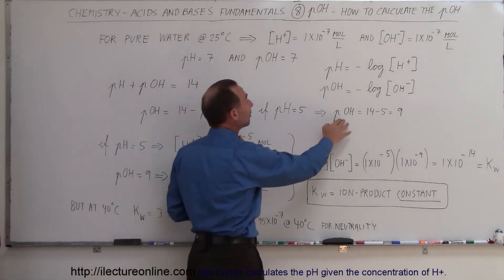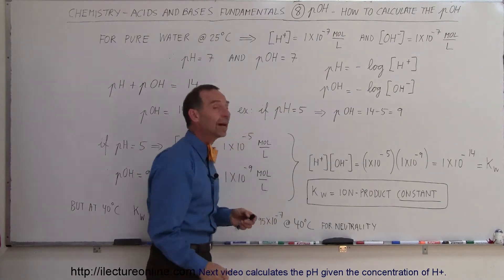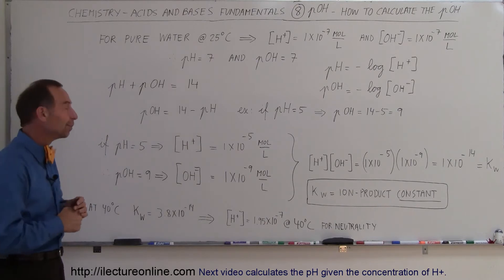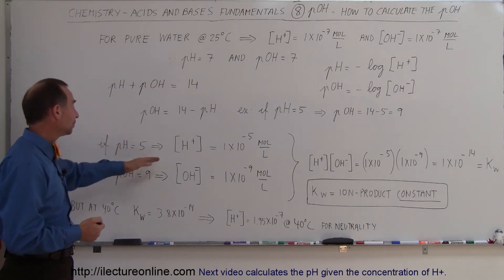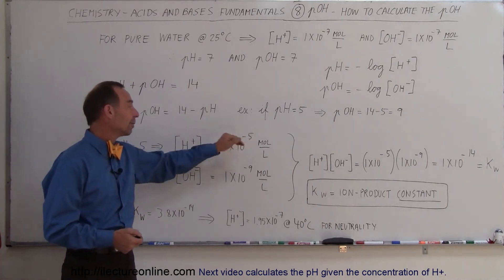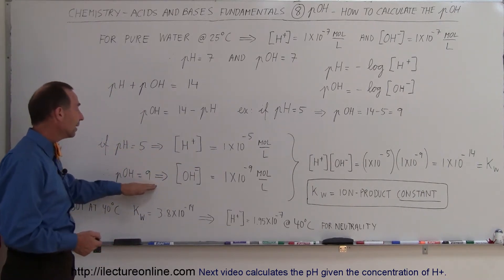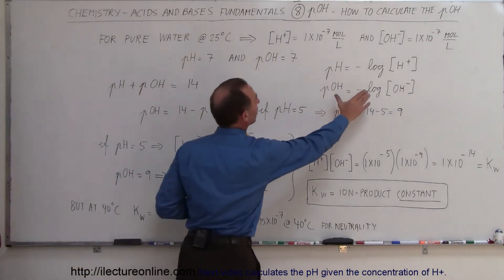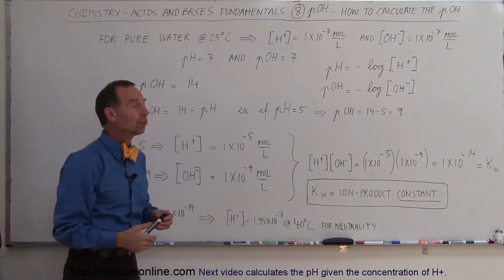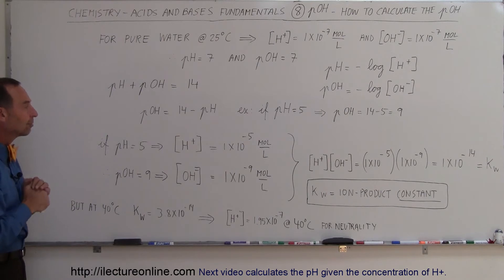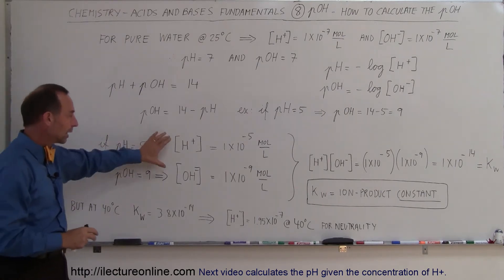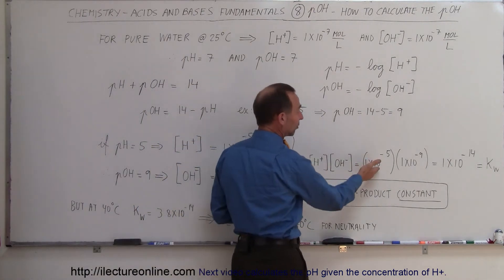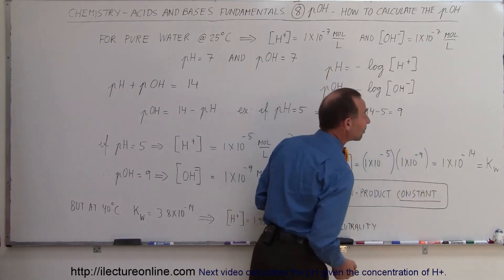For example, if the pH is 5, then the pOH must be 14 minus 5, which equals 9. This makes it easy to figure out concentrations: if the pH is 5, the concentration of hydrogen ions is 1×10⁻⁵. If the pOH is 9, the concentration of hydroxide ions is 1×10⁻⁹ moles per liter. When we multiply those two concentrations together, we get 1×10⁻⁵ times 1×10⁻⁹, which equals 1×10⁻¹⁴.